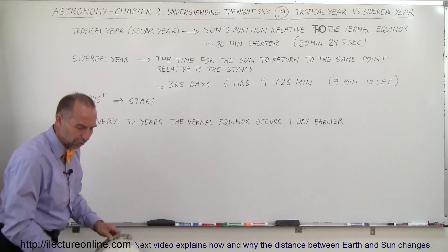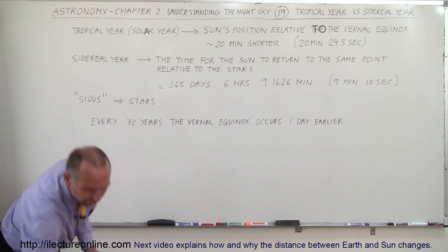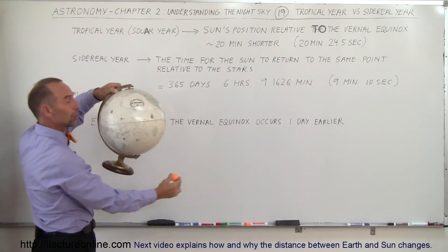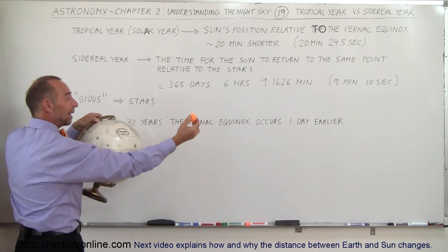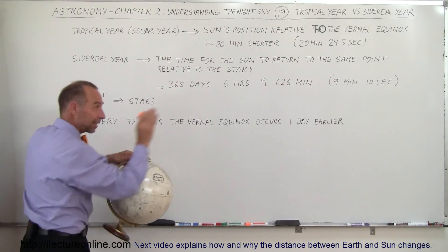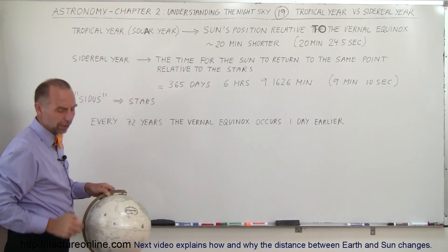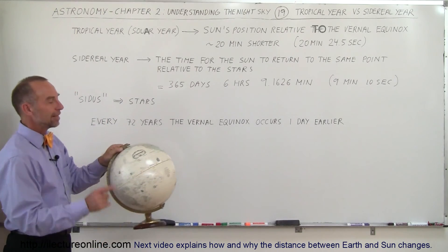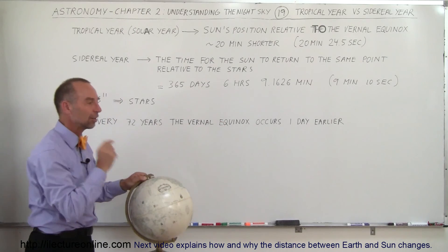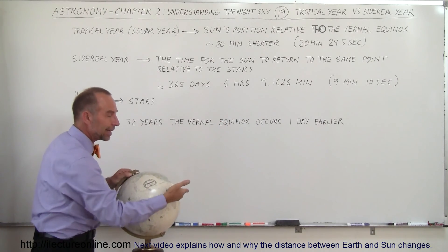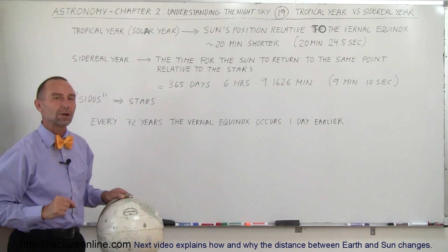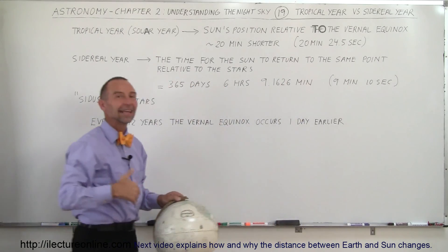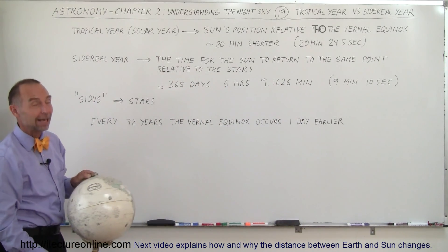Just to make sure we've got that straight — imagine here's the Sun, here's the Earth, and the stars on the other side. When the Earth makes one complete trip such that the Sun, the Earth, and the stars are exactly lined up again in the same way, that's called a sidereal year. The solar year, by contrast, is the amount of time it takes for the Earth to orbit the Sun such that the Sun will be directly above the equator again on March 21st — and that happens to be about 20 and a half minutes less than a complete sidereal year.